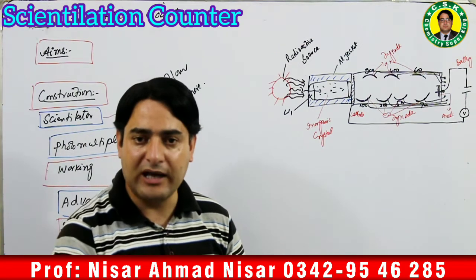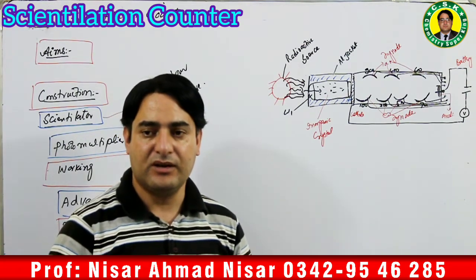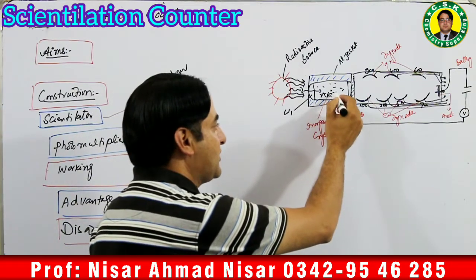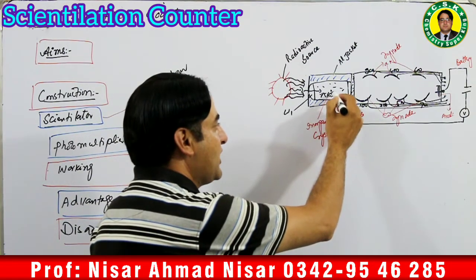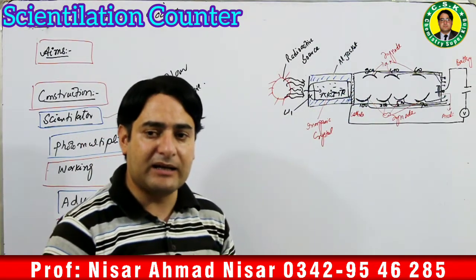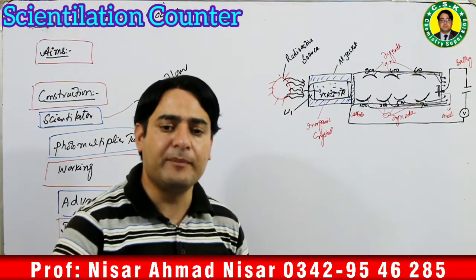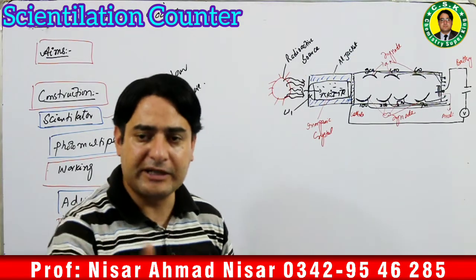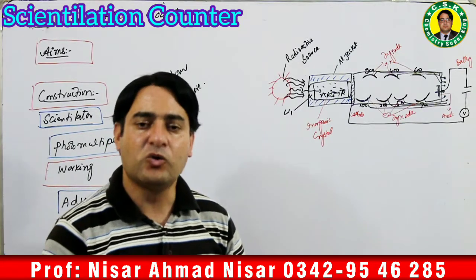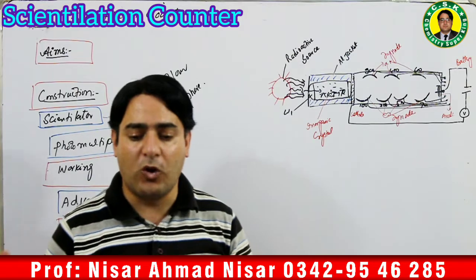A commonly used scintillator material is sodium iodide with a little thallium (NaI(Tl)), which is used for the detection of gamma rays. For beta particle detection, we use anthracene. For alpha particle detection, we use zinc sulfide. Para-terphenyl is another compound used as a scintillator material.